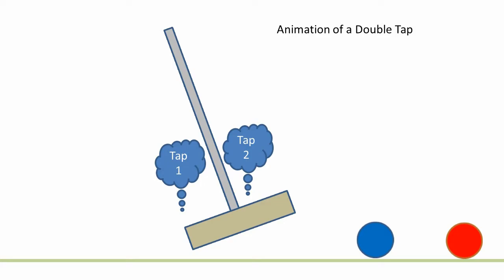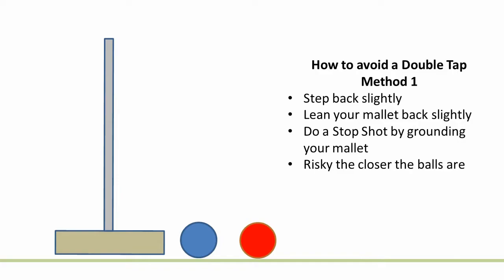So rule one to avoid a double tap is to stop your mallet from following through. One technique to avoid follow through is to perform a stop or stun shot by grounding the back of the mallet. Step back very slightly from your normal stance and lean the mallet back very slightly.